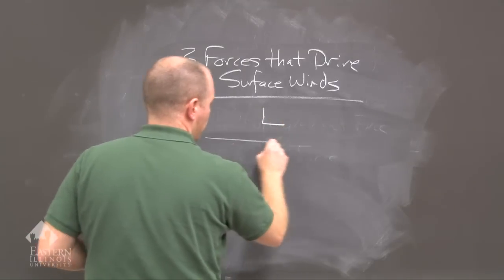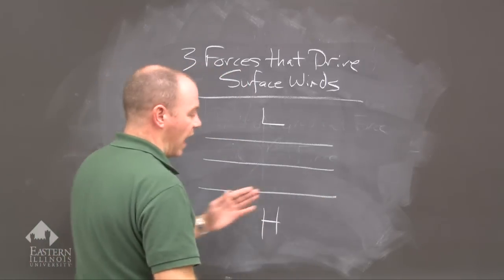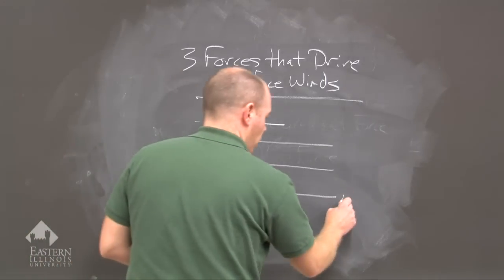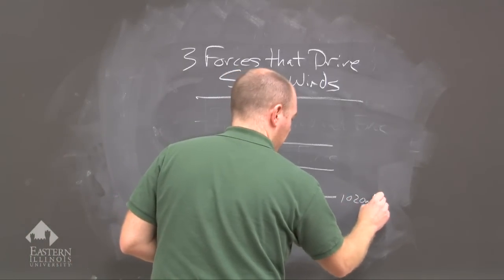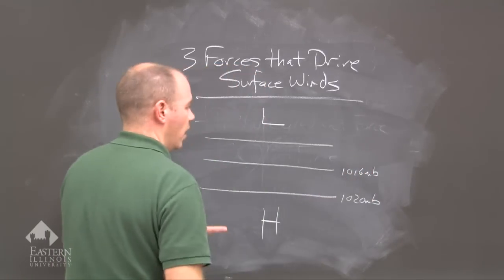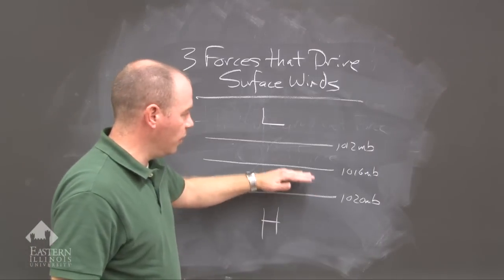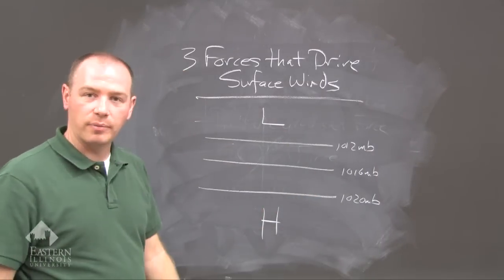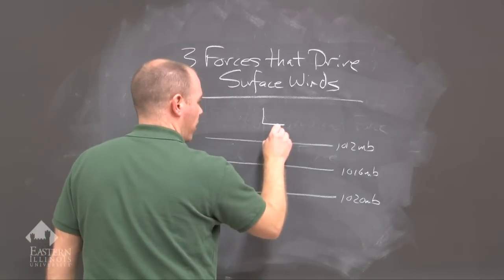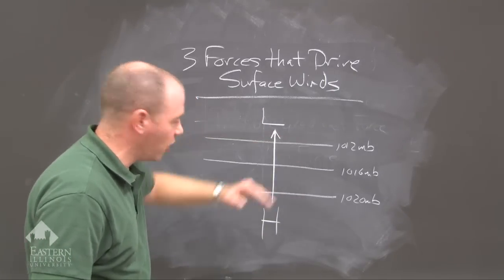Here is a low pressure with isobars around it. The values show a change in pressure as we go north: 1020 millibars — higher pressure — then 1016 millibars, then 1012 millibars, and then a low pressure. For every four millibars we draw an isobar, an equal line of pressure. Pressure gradient is that change in pressure over distance, so that's the pressure gradient force — we are changing pressure as we go north.